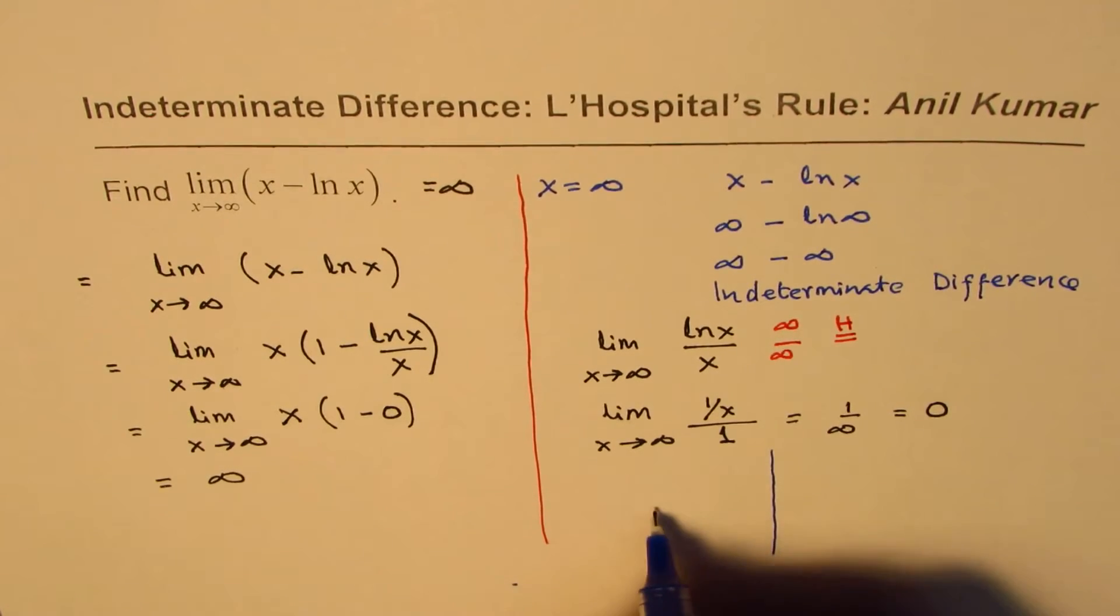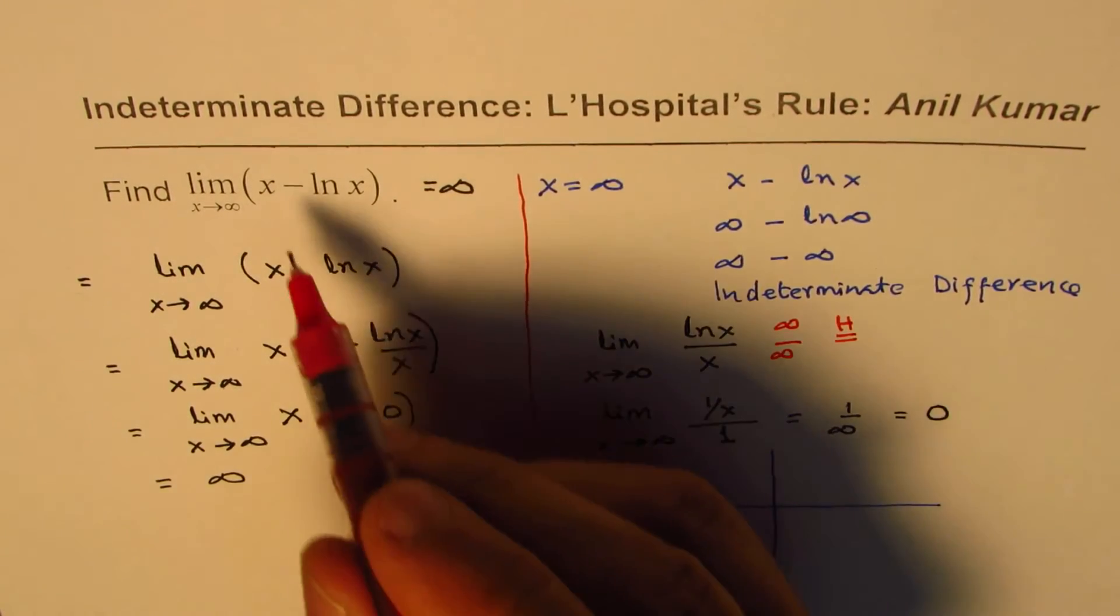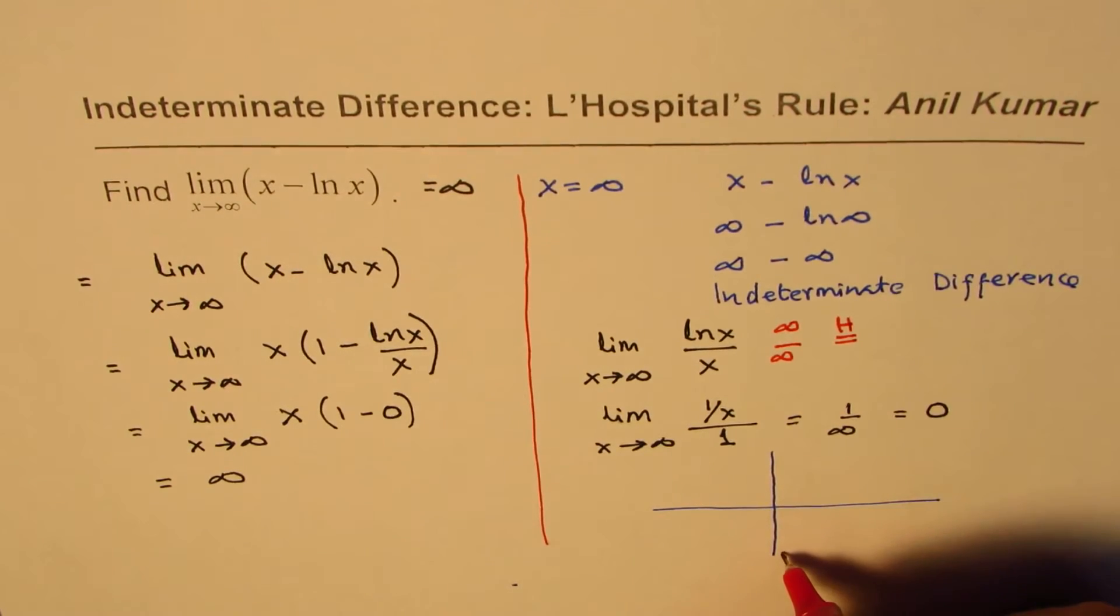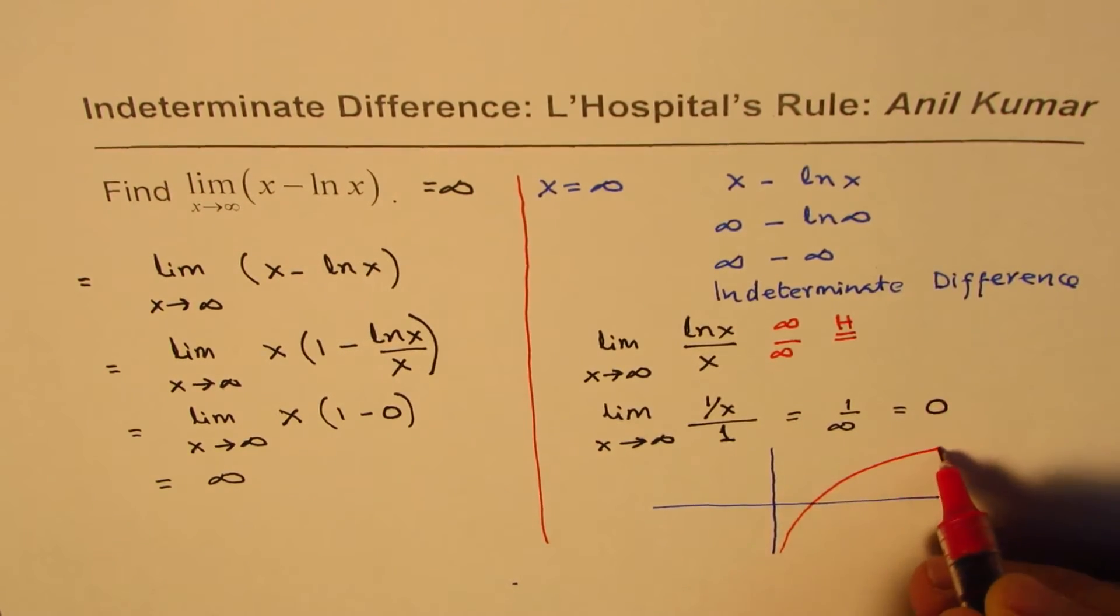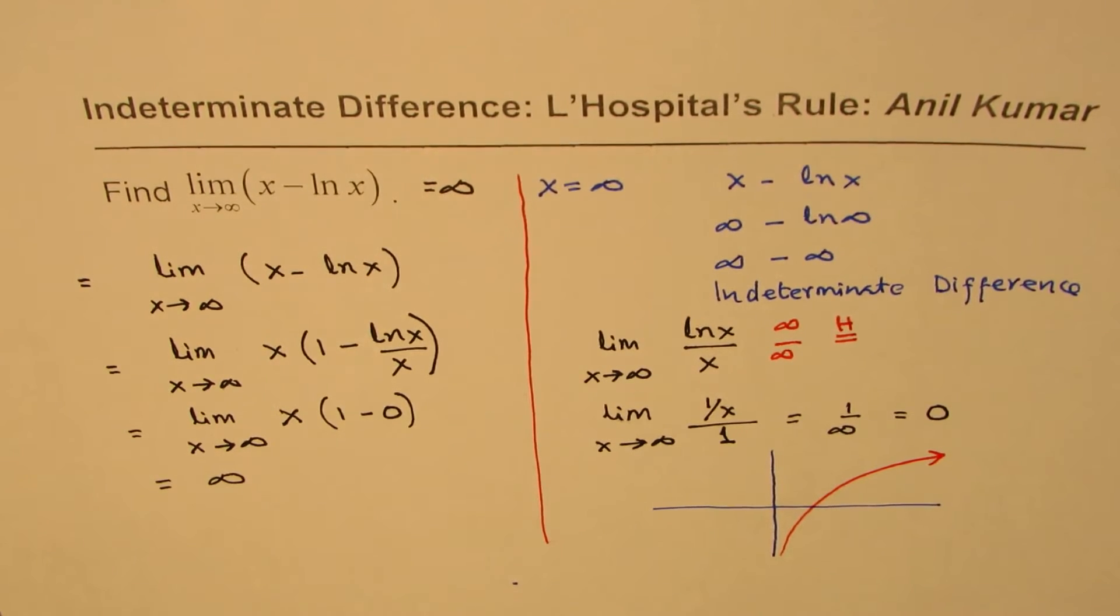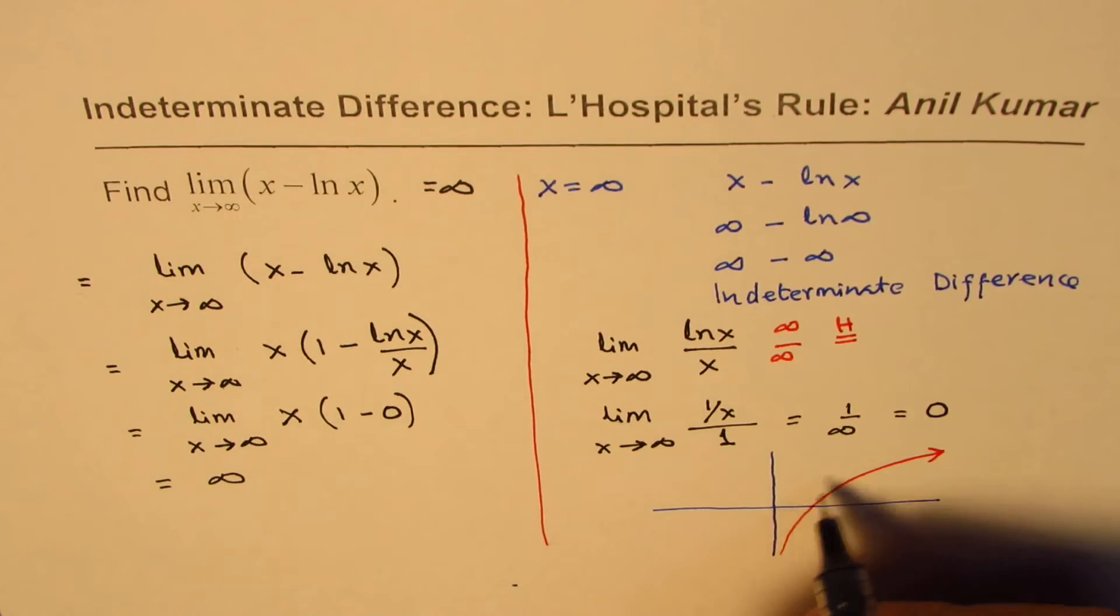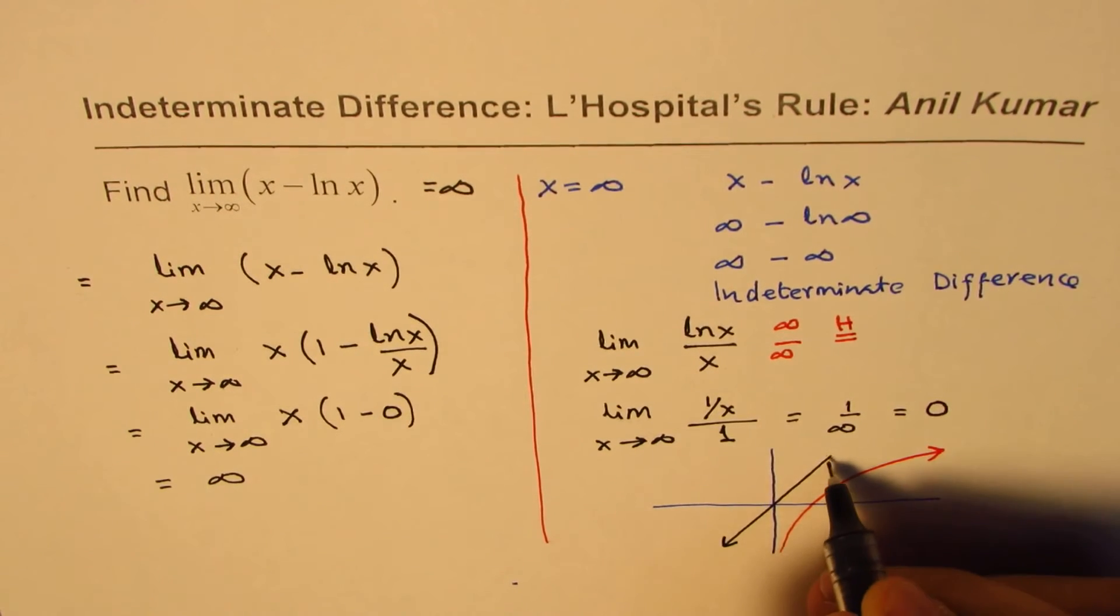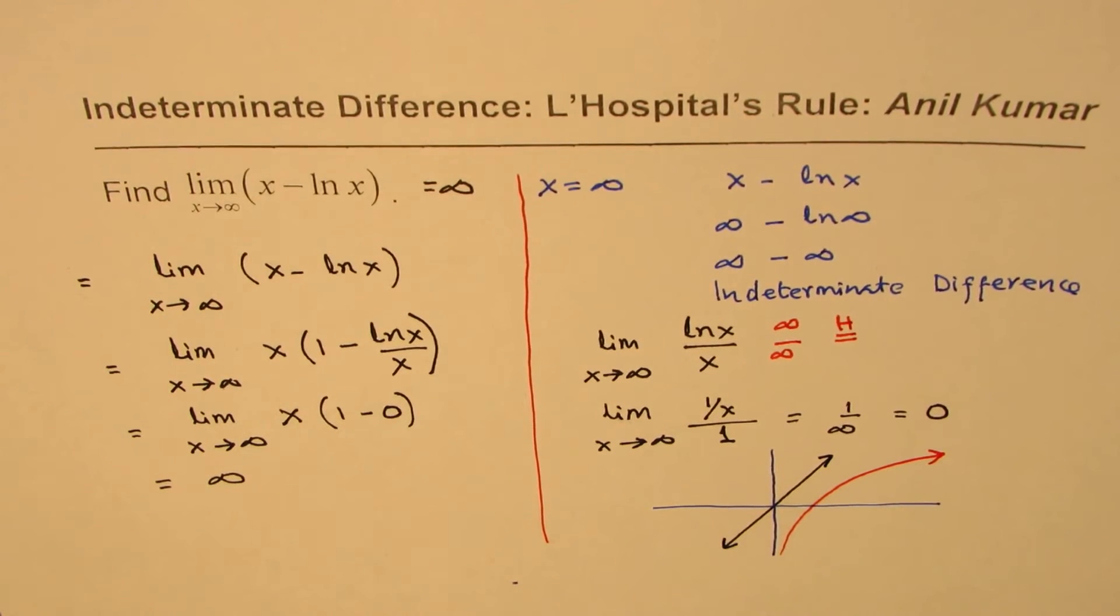You can also see with the help of a graph. In this particular case, if I sketch ln x, then ln x is a function which is kind of like this, and the other function which is x will be kind of like this.